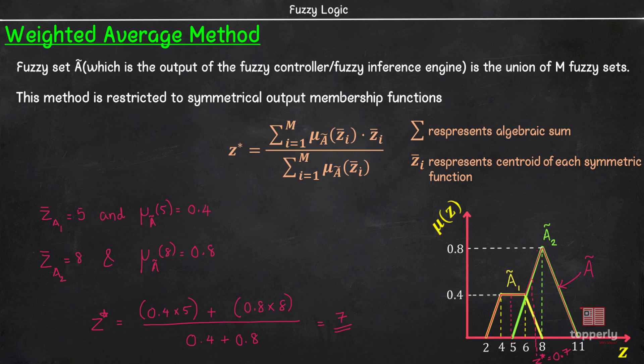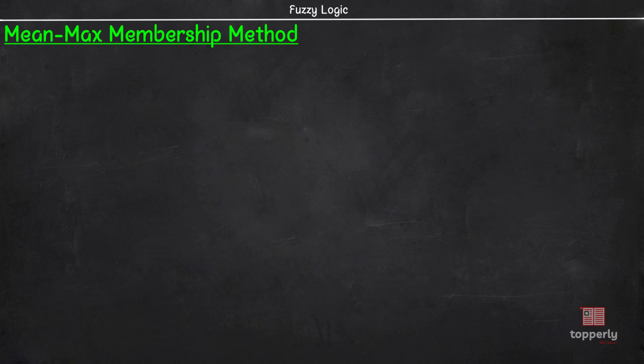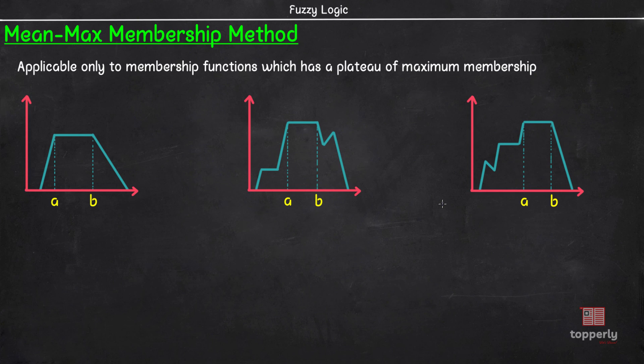Next method for defuzzification is the mean max membership method. This method is applicable only to membership functions which have a plateau of maximum membership. Some examples of such memberships are these. Here, the defuzzified value z* is given by z* = (a + b)/2. That is, the average value of the start of the maximum membership plateau and the end of the maximum membership plateau. I hope this is clear for you.